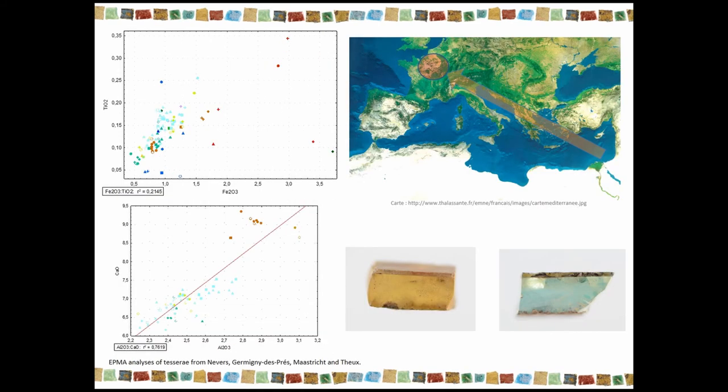Now, let's try to make some kind of conclusion about the tesserae production and the glass production generally. At first, if we look at the composition of the colorless glass, we are going to see that for the 6th century, we still have an import of fresh glass. We have got very few traces of recycling, and the composition of the tesserae from Nevers seems to fit with the Egypt 2 group.